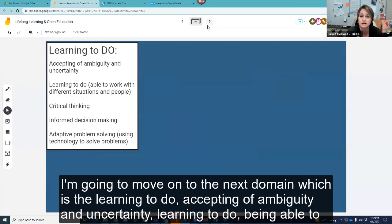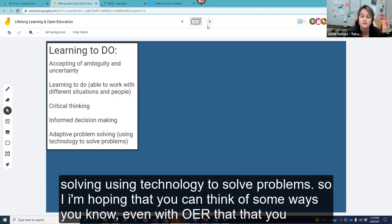I'm going to move on to the next domain, which is the learning to do, accepting of ambiguity and uncertainty, learning to do, being able to work with different situations and people, critical thinking, informed decision-making and adaptive problem solving using technology to solve problems.